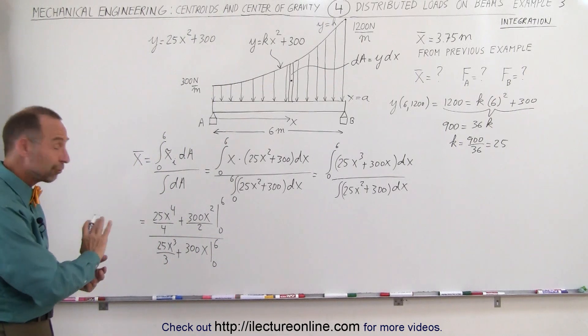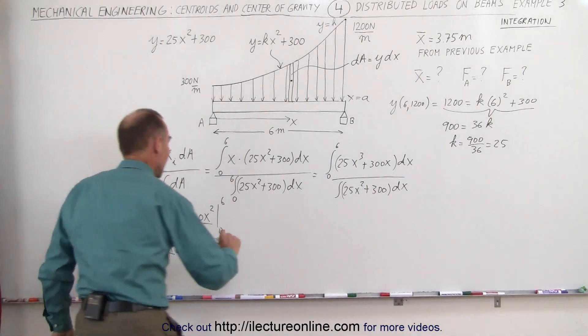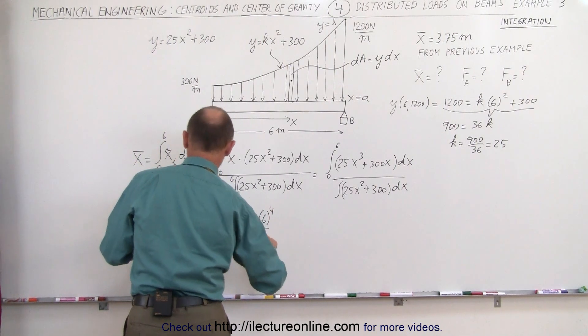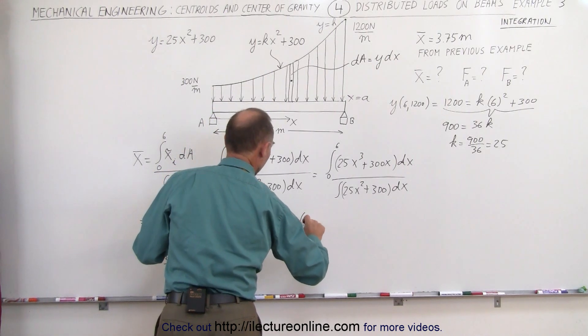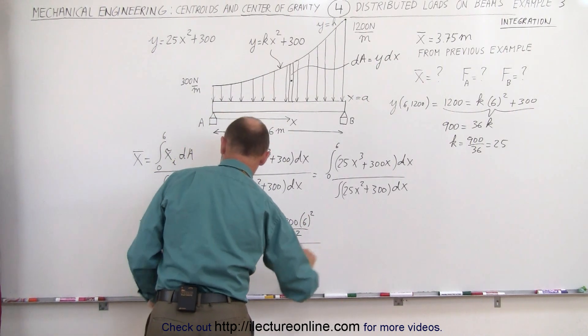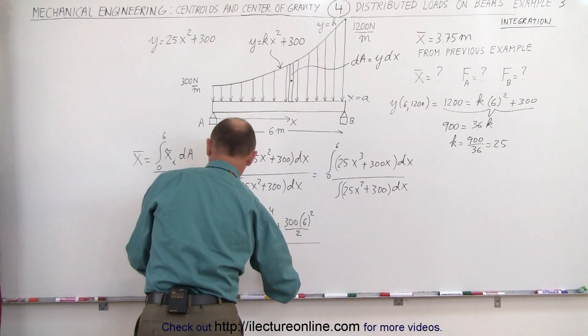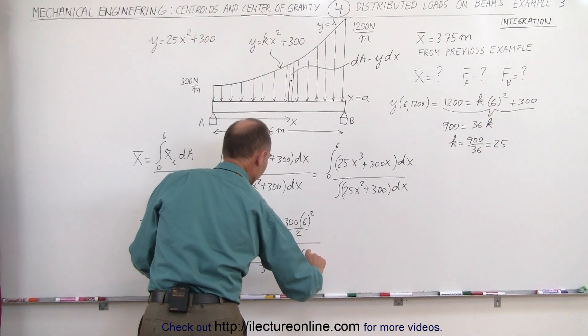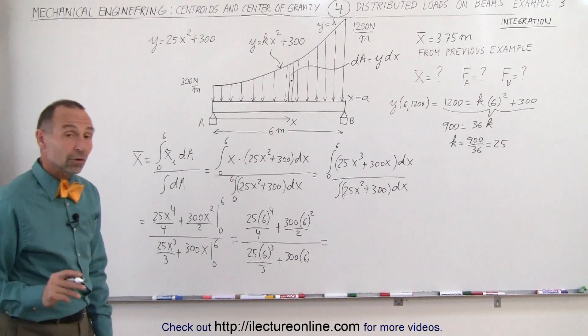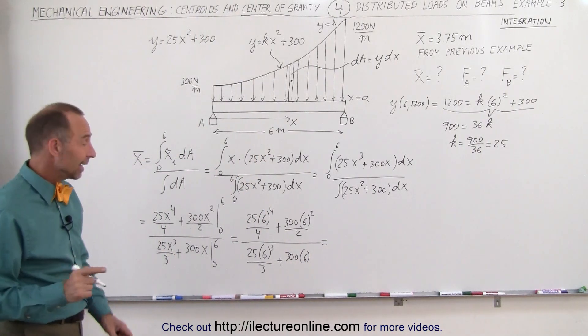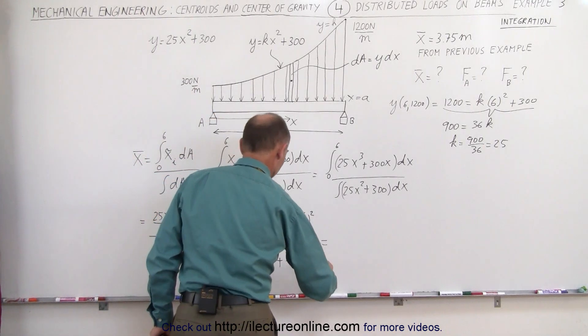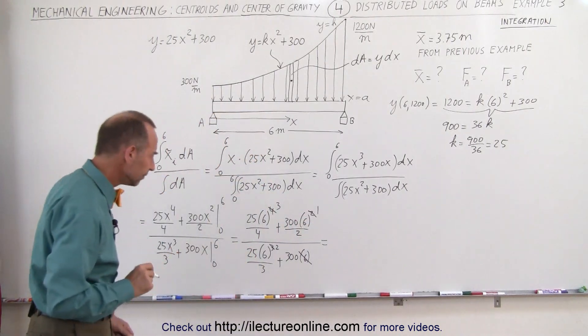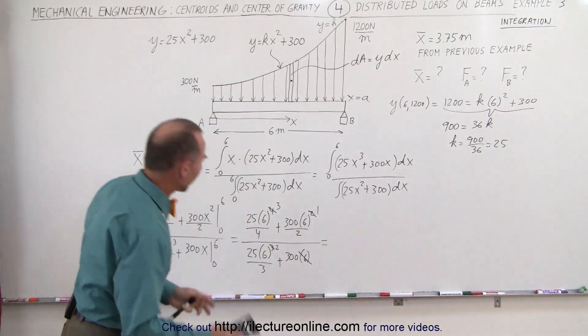Plugging in the upper limit, we don't have to worry about the lower limit because we just get 0 there. That is equal to 25 times 6 to the 4th power divided by 4 plus 300 times 6 squared divided by 2. The denominator we get 25 times 6 to the 3rd power divided by 3 plus 300 times 6 to the 1st power. Since all the terms have at least one 6 in them, I can divide the numerator and the denominator by 6. That becomes squared, that becomes the 1st power, and this becomes the 3rd power.